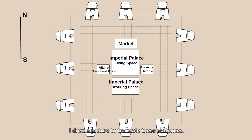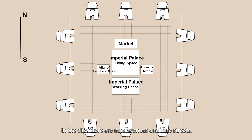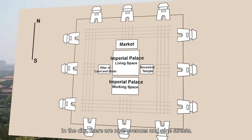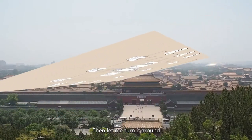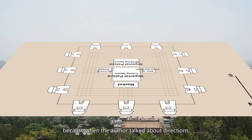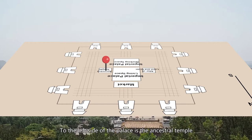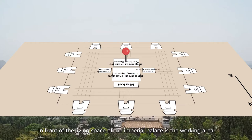I drew a picture to translate these sentences. The city has three gates on each side of the wall. In the city, there are nine avenues and nine streets. Because the author was facing south when discussing directions: to the left side of the palace is the ancestral temple, and to the right side, the altar of land and grounds. In front of the living space of the imperial palace is the working area, and behind it is the market.